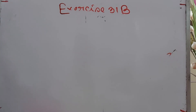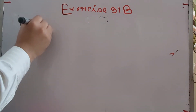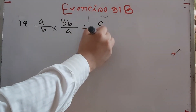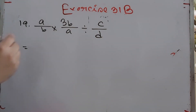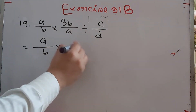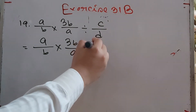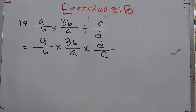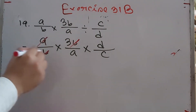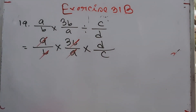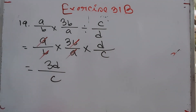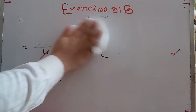Number 19: a/b times 3b/a divided by c/d. Multiply a/b × 3b/a × d/c (reciprocal of c/d). Cancel b by b and a by a. Answer is 3d/c.